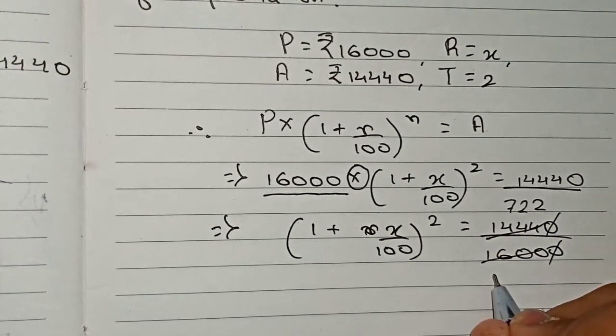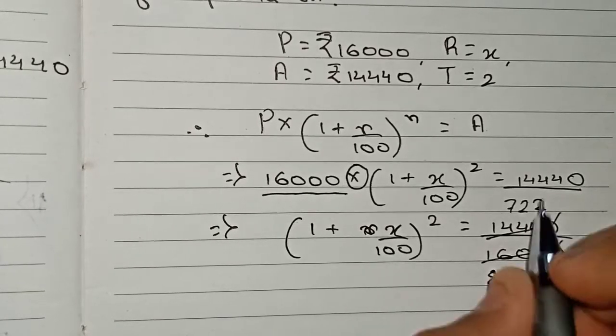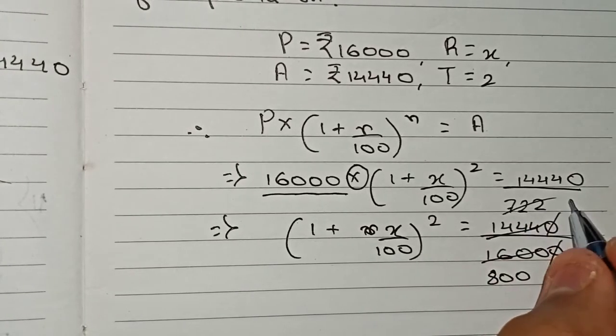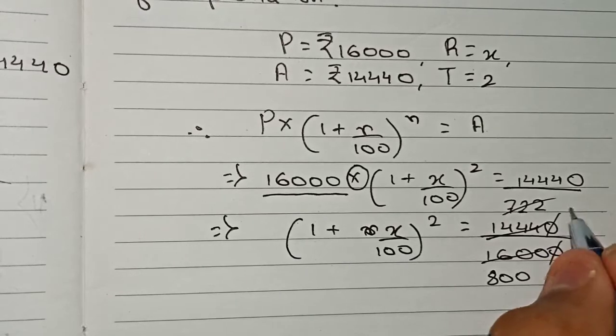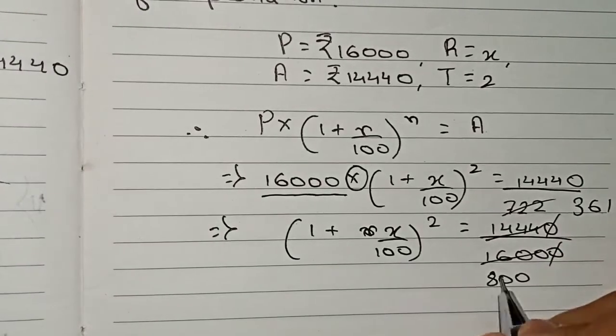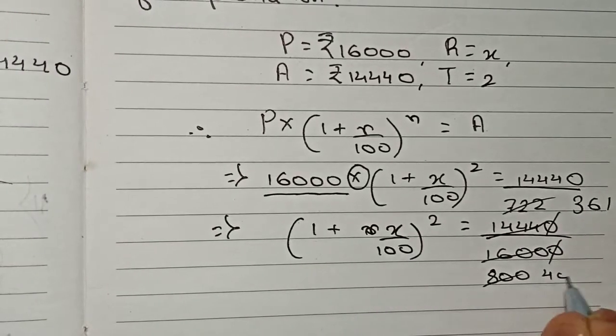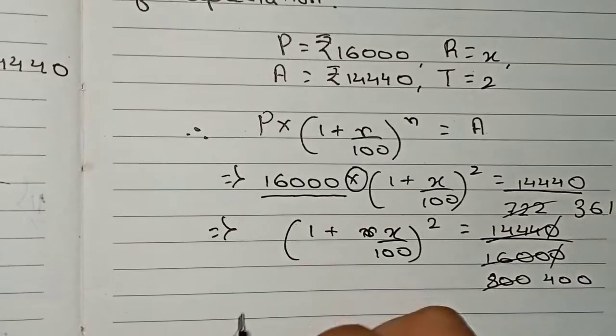So now therefore you can write that (1 plus x/100) to the power 2 is equal to 361 by 400.